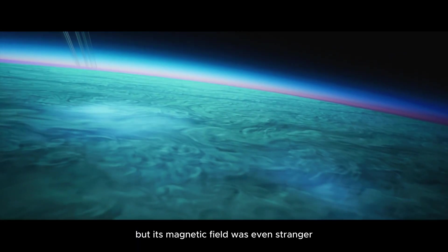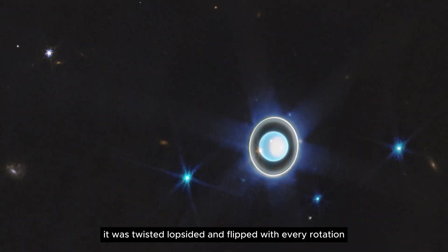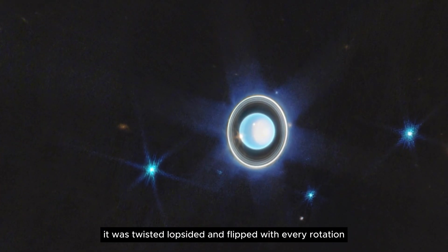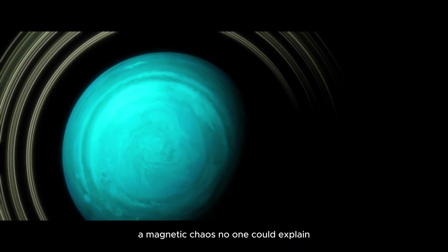But its magnetic field was even stranger. It didn't pass through the planet's center. It was twisted, lopsided, and flipped with every rotation, a magnetic chaos no one could explain.